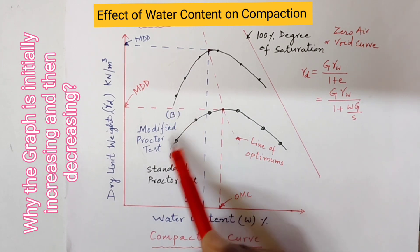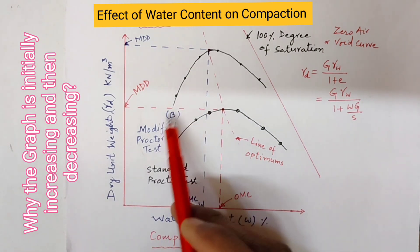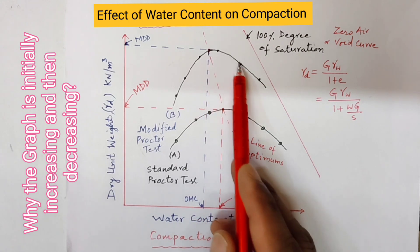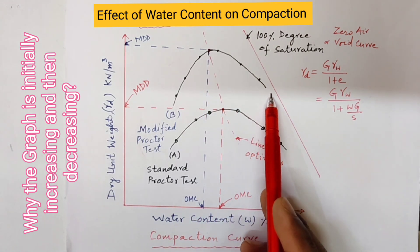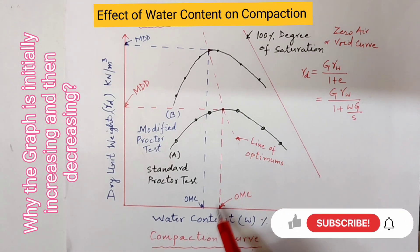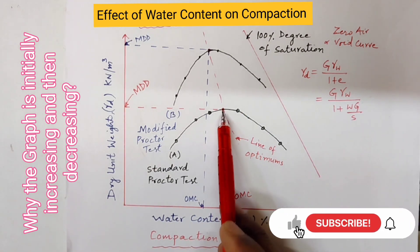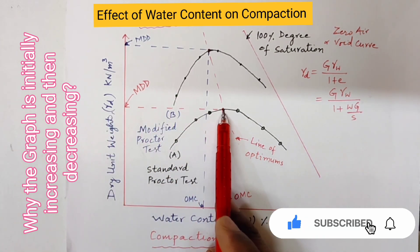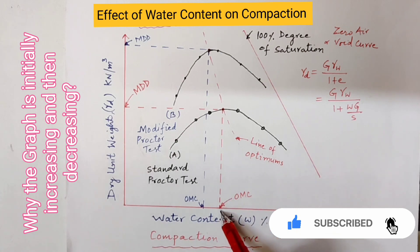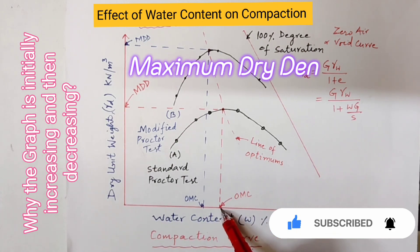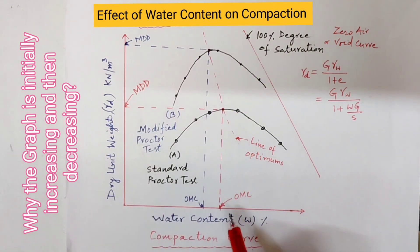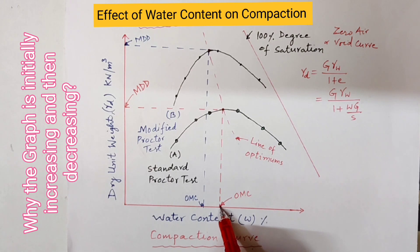Initially, when the water content increases, the dry density also increases, but only up to a certain limit. After that, it will decrease when the moisture content increases. This curve is unique for a given soil type, method of compaction, and compactive effort. The peak point of the compaction curve corresponding to the maximum dry unit weight is gamma d max. The water content corresponding to the maximum dry unit weight is known as the optimum moisture content.